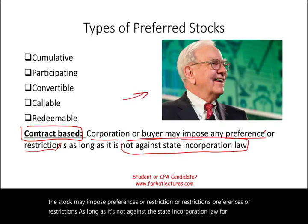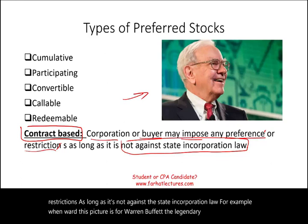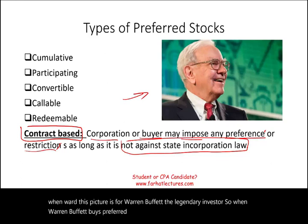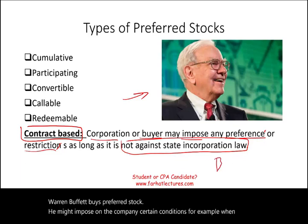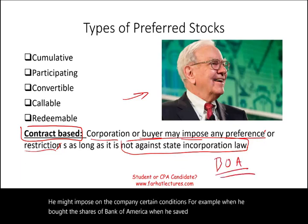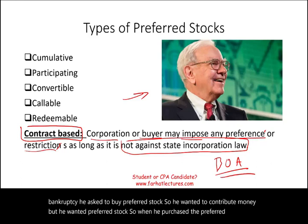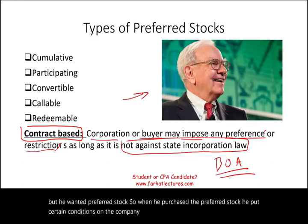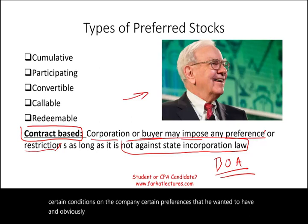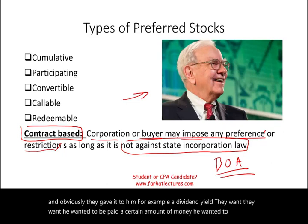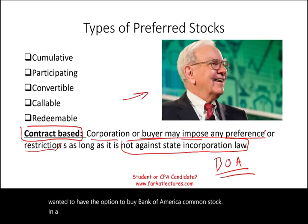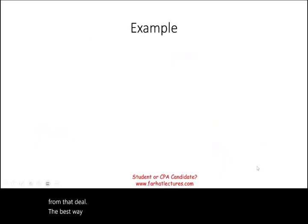For example, this picture is of Warren Buffett, the legendary investor. When Warren Buffett buys preferred stock, he might impose certain conditions on the company. When he bought shares of Bank of America and helped save it from bankruptcy, he asked to buy preferred stock with certain conditions and preferences. For example, he wanted a specific dividend yield and the option to buy Bank of America common stock at a certain price. He made billions of dollars from that deal.